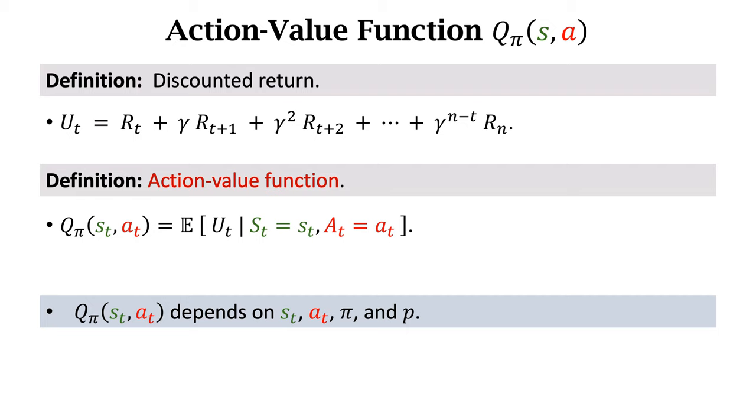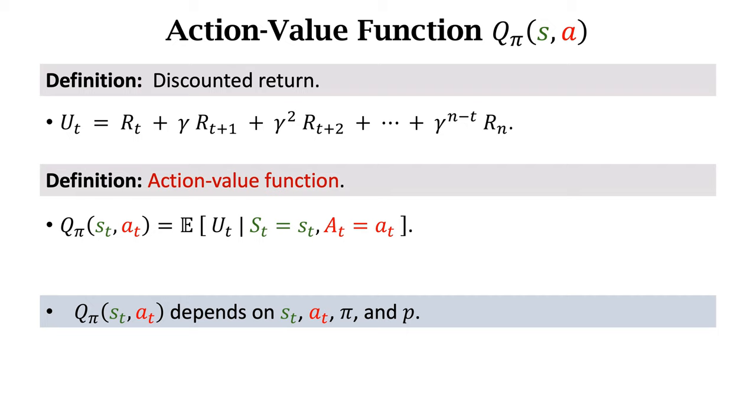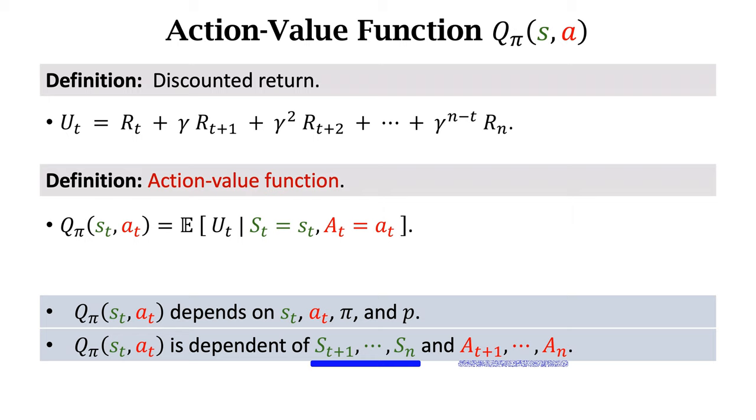Sometimes q_π is called critic because q_π evaluates how good the agent's performance is. In sum, the action value function q_π depends on the current state st, the current action at, the policy function π, and the state transition function p. q_π is independent of the future states st+1 to sn and the future actions at+1 to an. The future states and future actions are eliminated by the expectation.